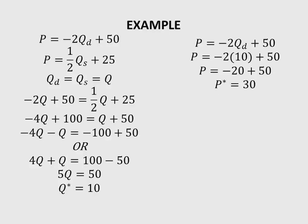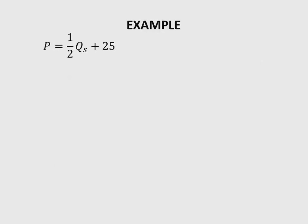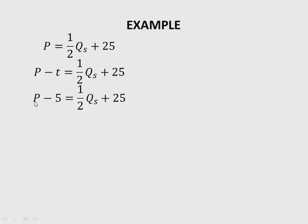Now with a tax of five dollars, we want to see the effect on the market. With the initial supply curve P = ½Qs + 25, we let T represent the tax. Because the price received by sellers reduces by the amount of the tax, we subtract the tax from the price in the supply equation. So we have P - T = ½Qs + 25, which means P - 5 = ½Qs + 25. Always remember to introduce the tax into the supply equation before solving for the new equilibrium.